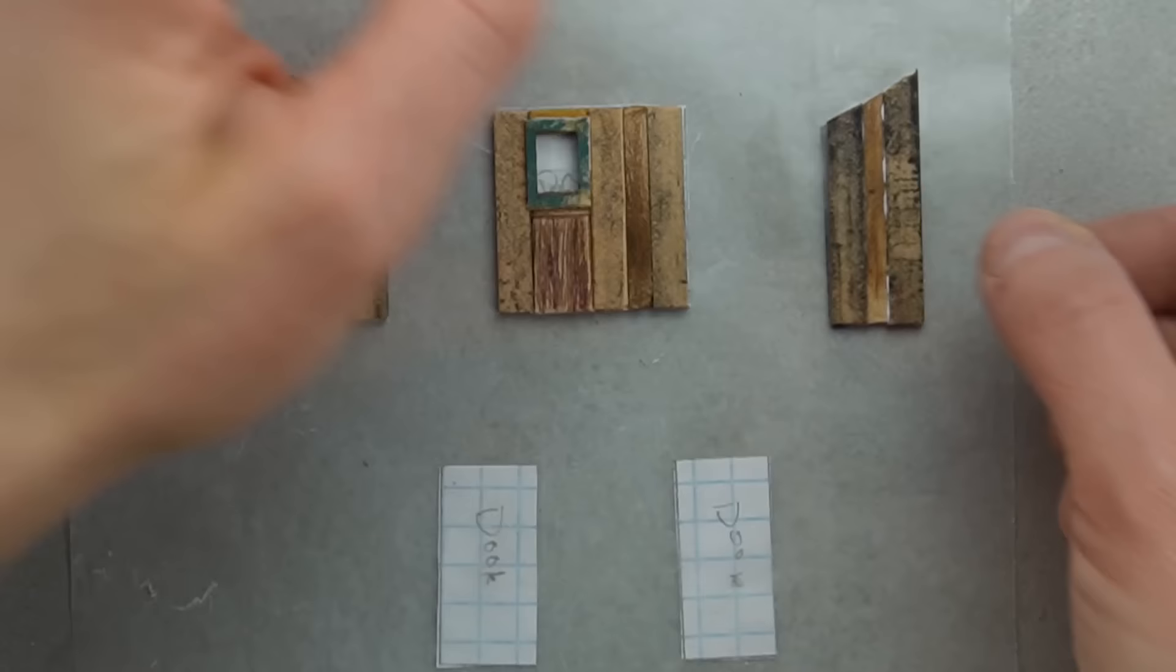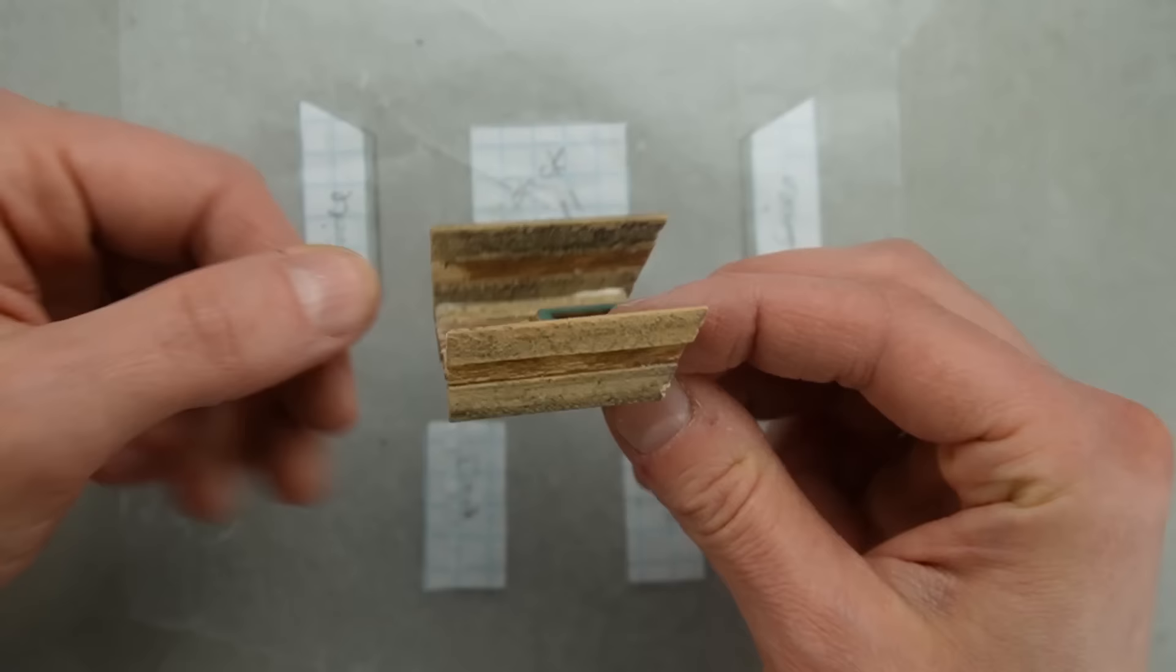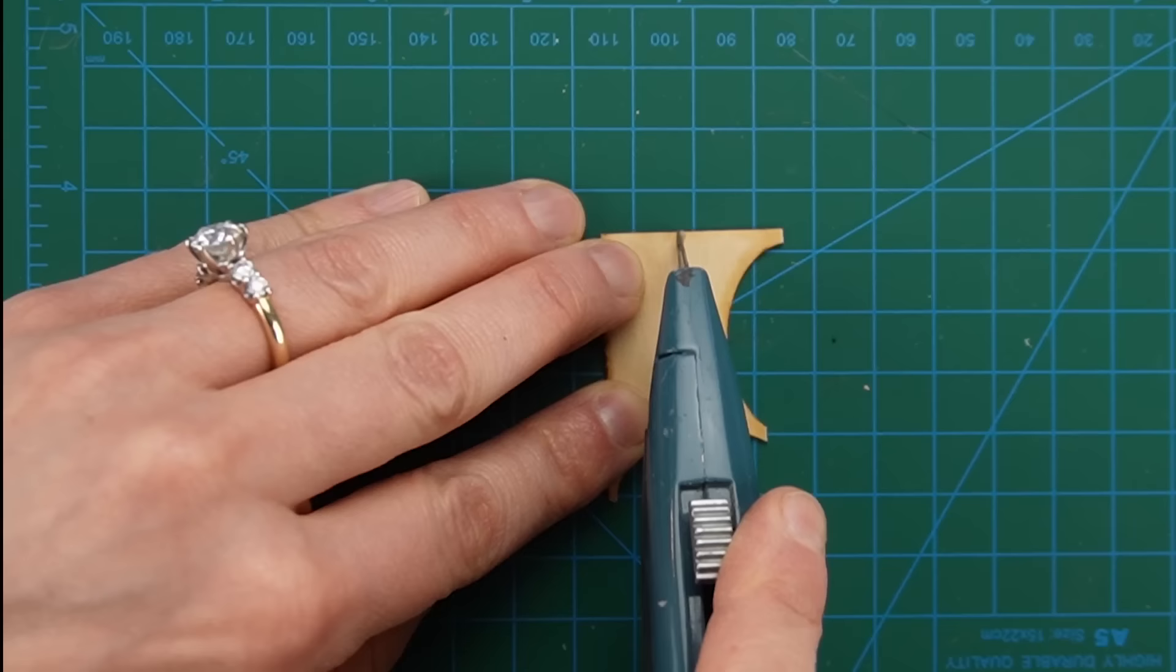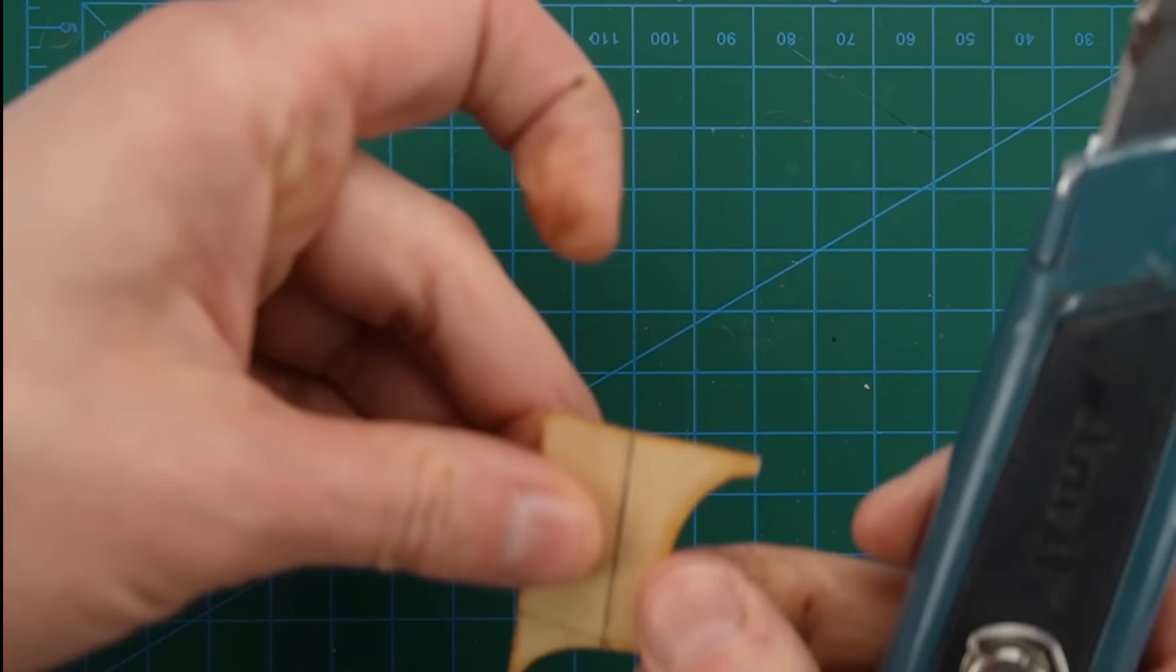I assembled the main body of the shed by gluing the side pieces to the back piece. I used the three walls to trace the shape of the floor onto some thin scrap wood from a miniature kit.